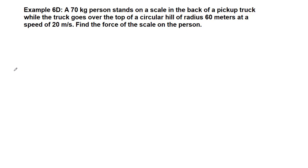Welcome to another example from chapter 6 using centripetal acceleration. We have a pickup truck and a person standing in the back on a flat scale. This person is 70 kg in mass and the truck is going over a hill that has a radius of 60 meters and a forward speed of 20 meters per second.